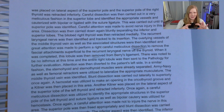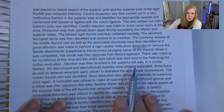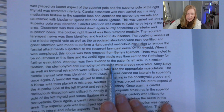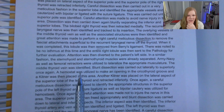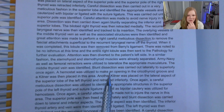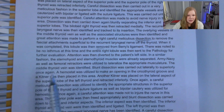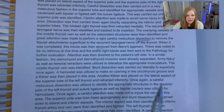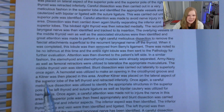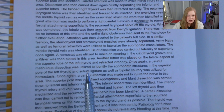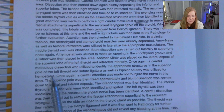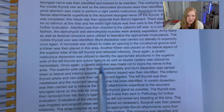The thyroid has two sides to it — it looks like a little butterfly. The right side was removed, and now attention was diverted to the patient's left side in a similar fashion. The sternohyoid and sternothyroid muscles were already separated. Army-Navy as well as femoral retractors were used to lateralize the musculature. The middle thyroid vein was identified. Blunt dissection was carried out laterally to superiorly. A hemostat was utilized to make an opening in the cricothyroid groove, and Kittners were placed. Meticulous dissection was utilized to identify the appropriate structures in the superior pole of the left thyroid.